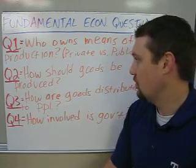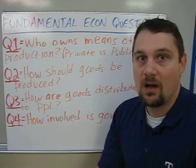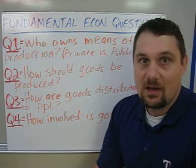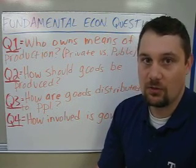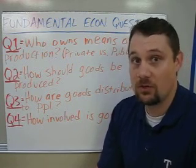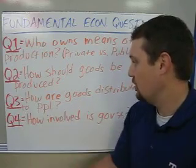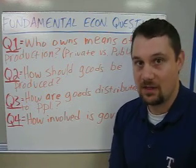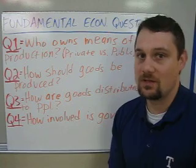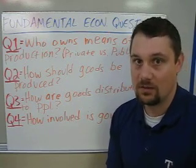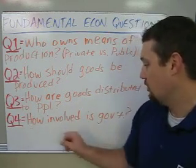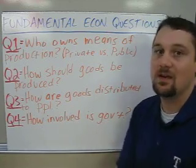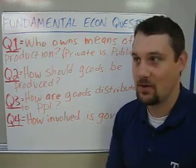Question two is: how should goods be produced? Basically, who decides what is made — should goods be made according to who wants them, or should the government decide all that? Question three is: how are goods distributed to people? Do people buy the things they need based on how much money they have, or does the government decide what stuff you get? And then finally, how involved is the government? I'll just write GOVT — use shorthand whenever possible.